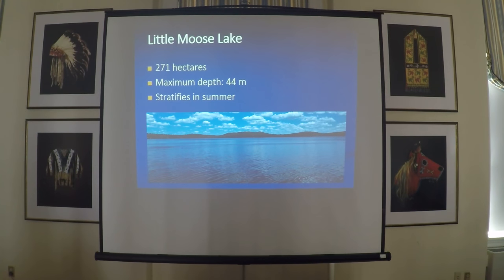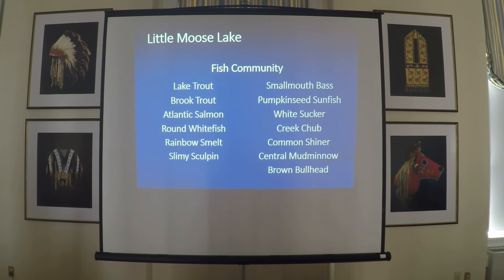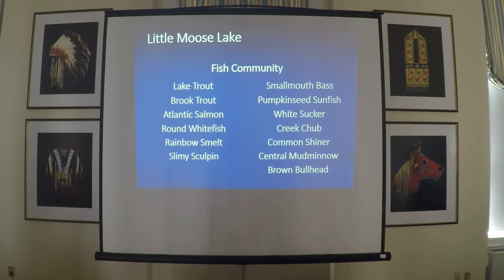It is 271 hectares in area, maximum depth up to 44 meters, and stratifies in the summer, which allows it to support both a warm and cold water fish community. Cold water species are on the left, and lake trout are the dominant predator in that component. There are seven warm water species of which smallmouth bass is the dominant predator.